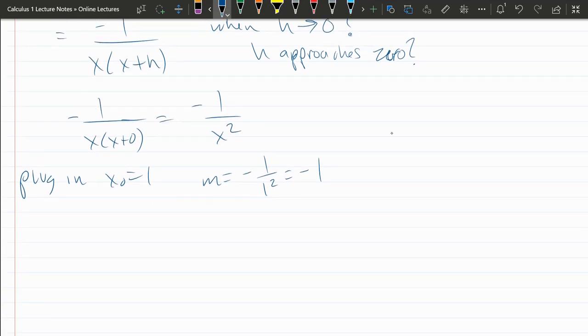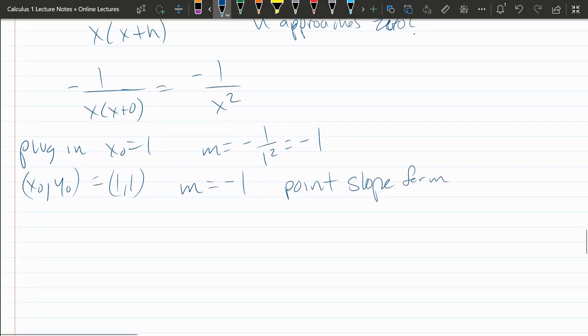So now we have our point. X naught, y naught is one, one. Our slope, m, is negative one. We're going to use the point-slope form. The best one generally for calculus, unless you already had a y-intercept, which you usually will not.